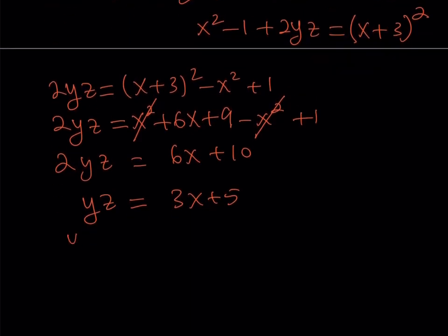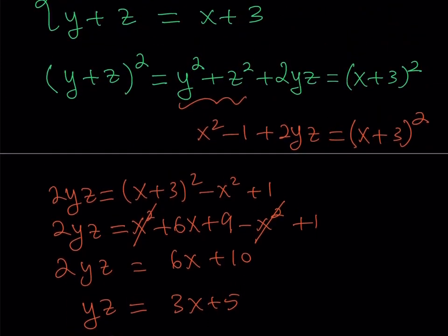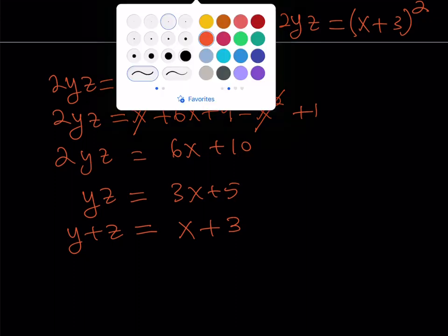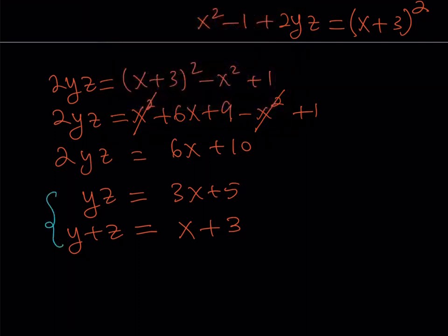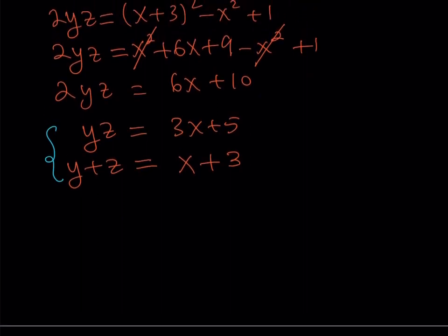So we have yz and y plus z. I'm going to put those together and use the Vieta approach, which you should remember from a previous video on Vieta's formulas — those formulas are super important when dealing with polynomial equations. We have a system in y and z, and if we treat x as a constant, we're essentially looking at a quadratic system. The Vieta approach lets us write an equation whose roots are y and z using their sum and product.